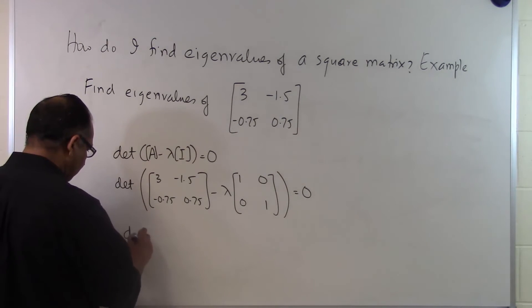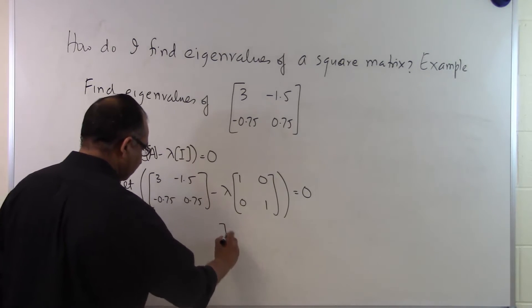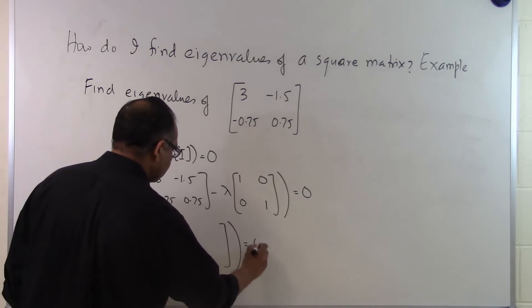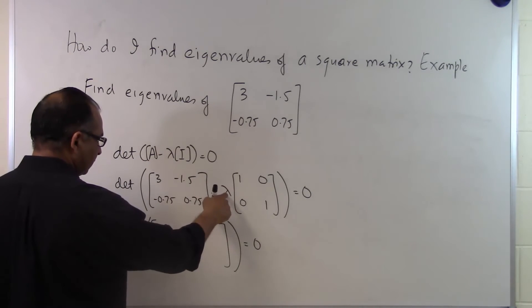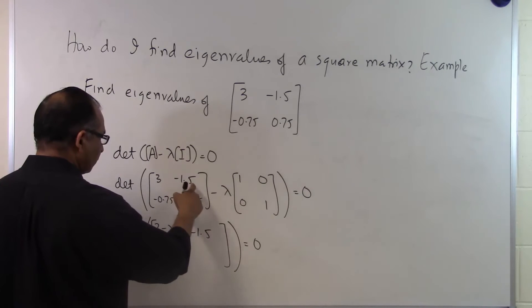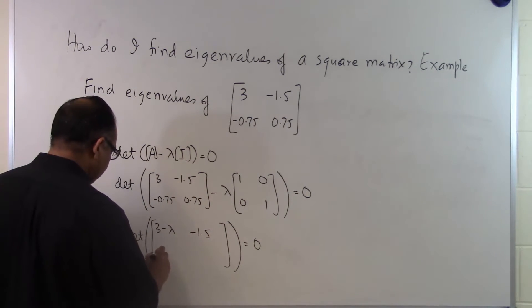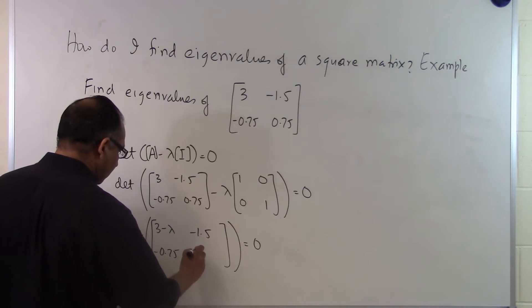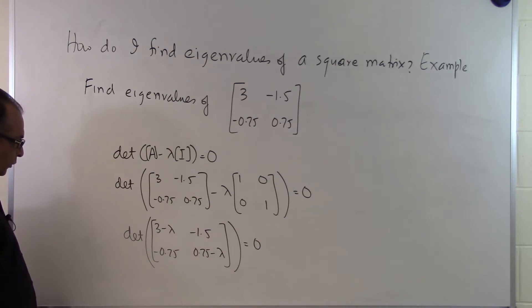If we do the matrix subtraction, we get 3 minus λ in the first position, -1.5 in the second, -0.75 in the third, and 0.75 minus λ in the fourth position. That's what we get when we subtract the two matrices.